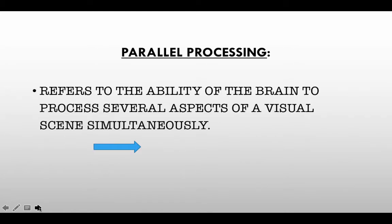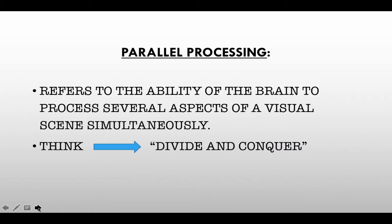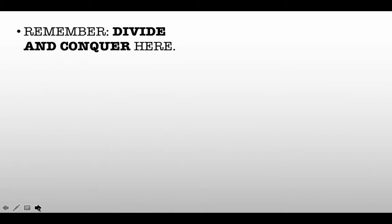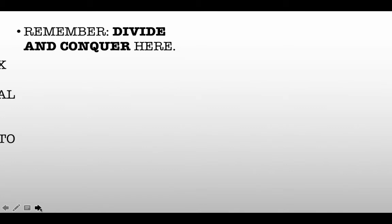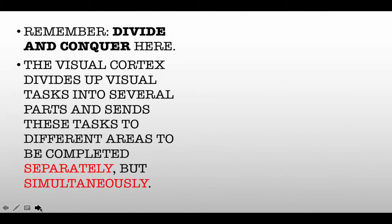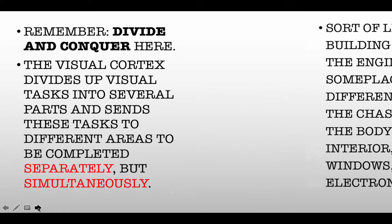Parallel processing refers to the ability of the brain to process many different aspects of a visual scene separately and simultaneously. This explains why we can process a visual scene so incredibly fast. You want to think divide and conquer here — our visual scene is divided into several different simpler aspects, and each one of those aspects is processed in a different area of our visual cortex at the same time, then brought together for recognition. Separate but simultaneously.